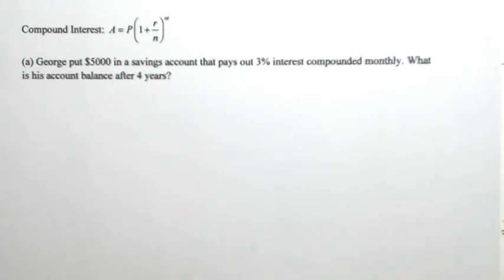Let's do a couple examples involving compound interest. So let's say that George put $5,000 in a savings account that pays out 3% interest compounded monthly. What is his account balance after four years?